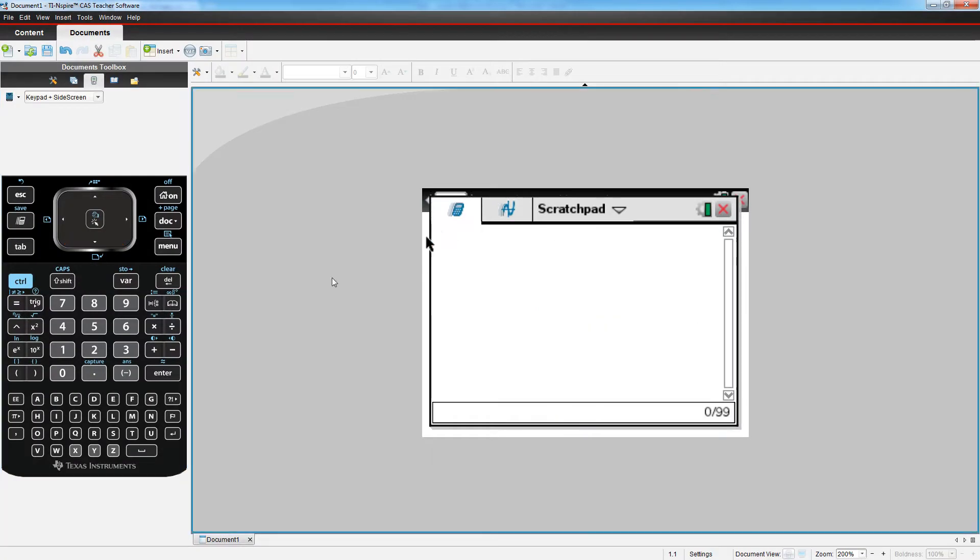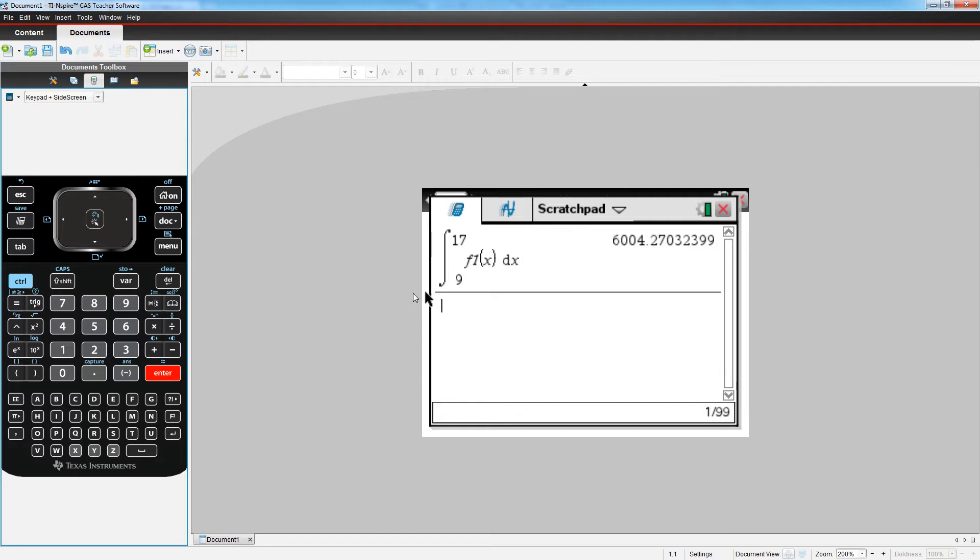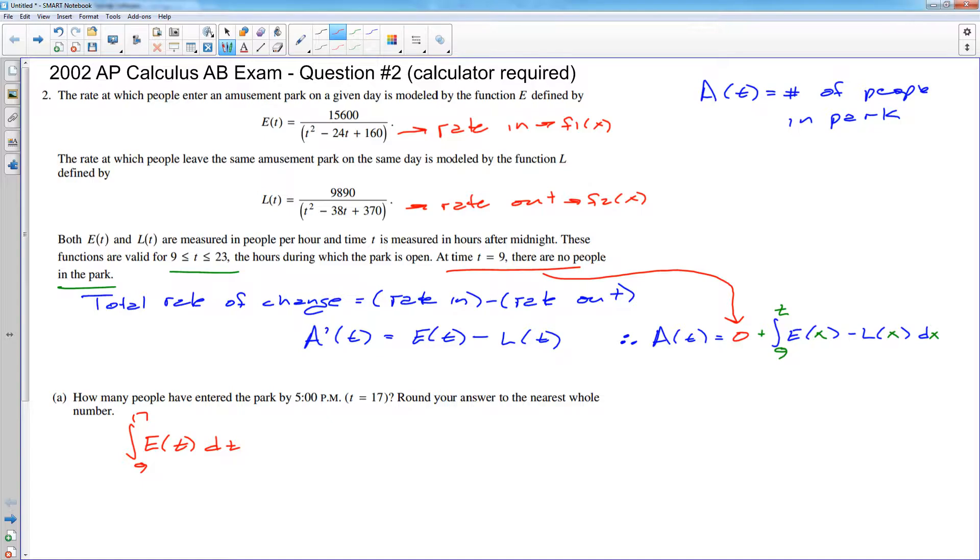And E of T is stored as F1 in my calculator. So I'll do the area from 9 to 17 of the function F1 of X, DX. I'm going to hit Control Enter to force the decimal. And you get 6,004.2. But we are talking about actual people here. So we're going to say 6,004 people. And that's really all you have to do.